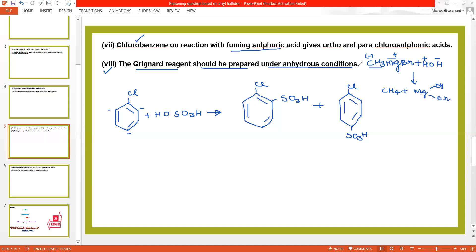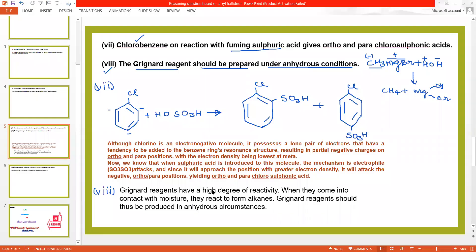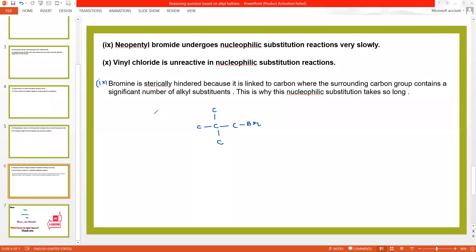You can note this reason. Reason number nine, neopentyl bromide undergoes nucleophilic substitution reaction very slowly. This is the structure of neopentyl. In neopentyl bromide center carbon cannot be attacked, that's why nucleophilic substitution reaction occurs very slowly.